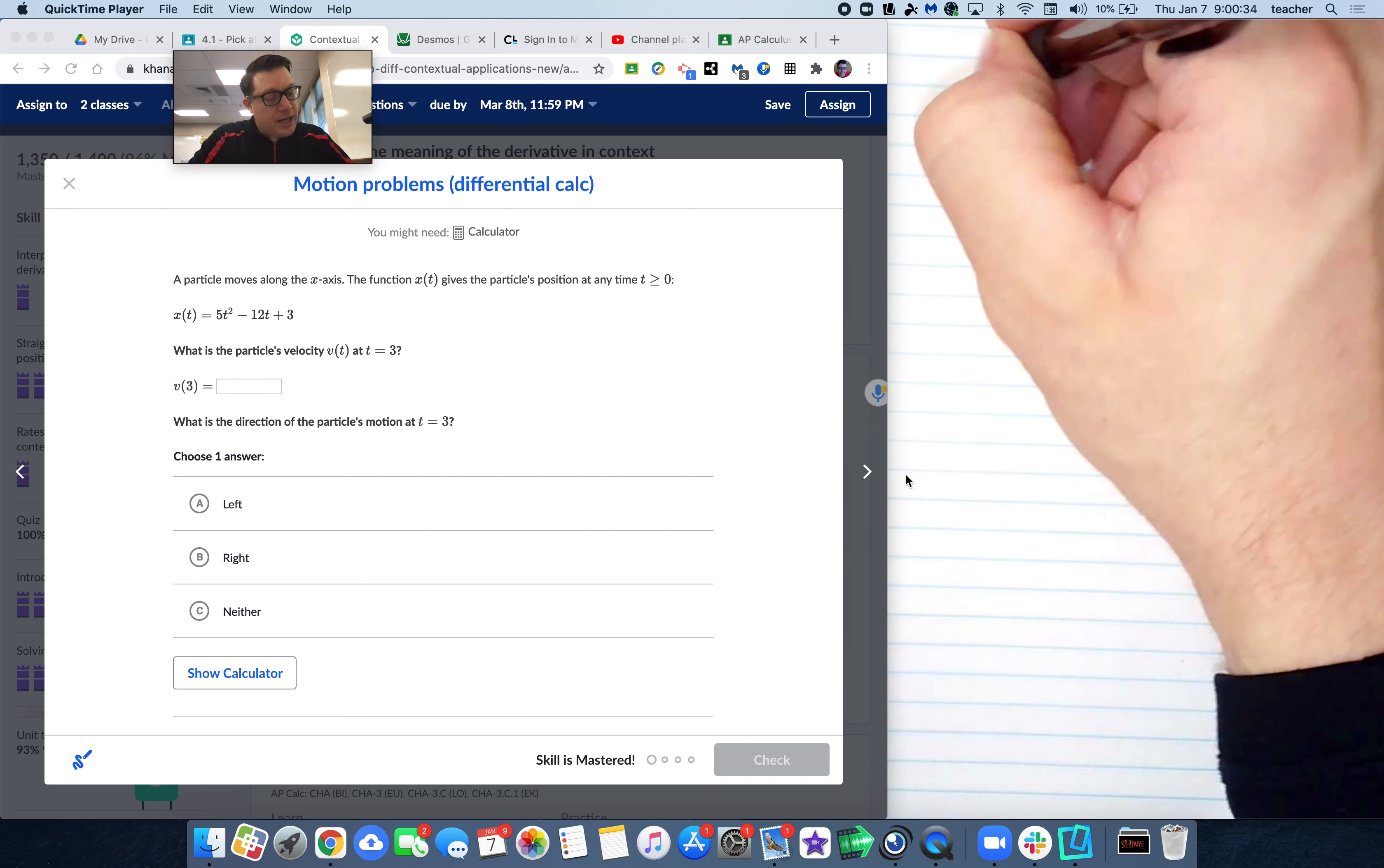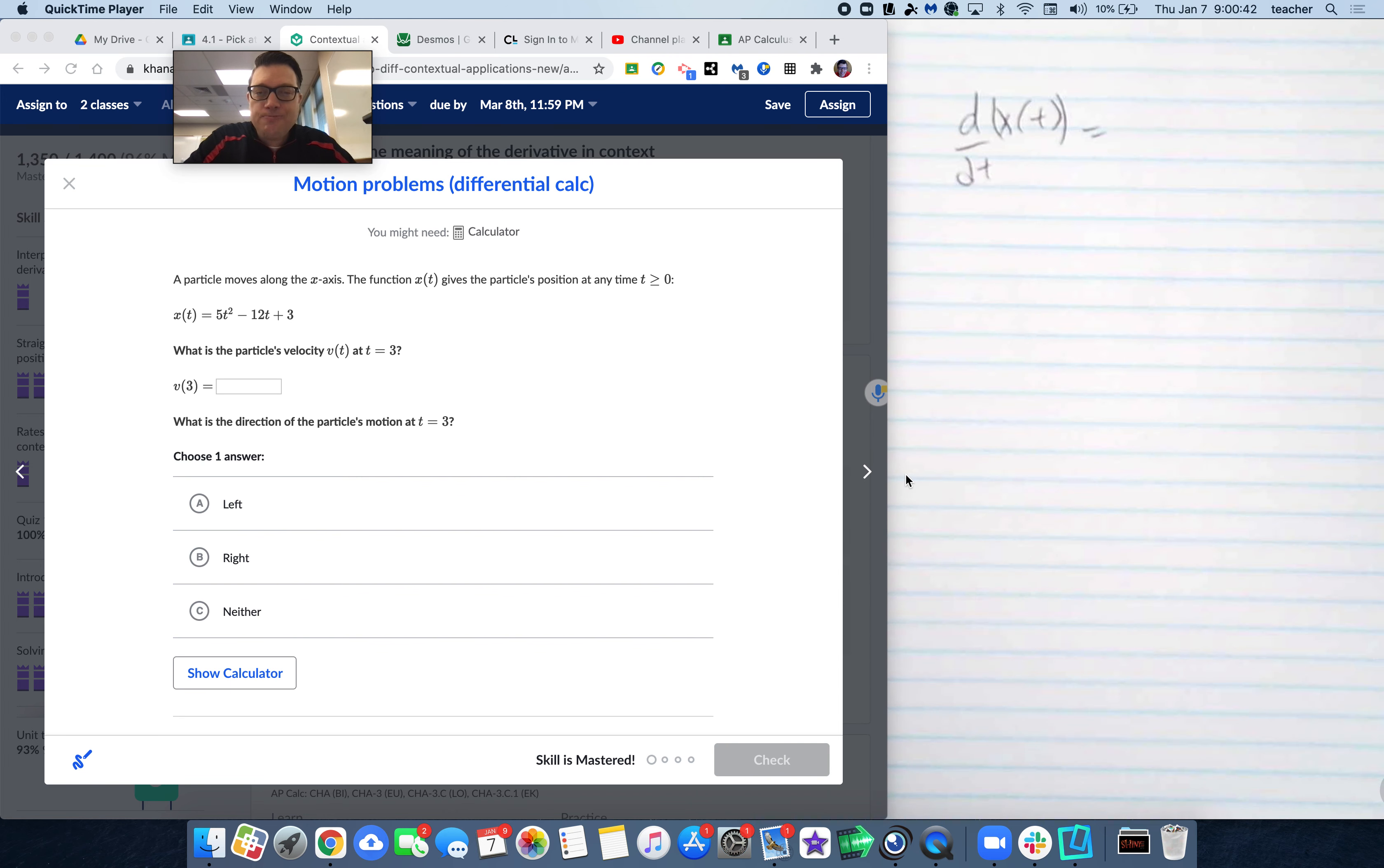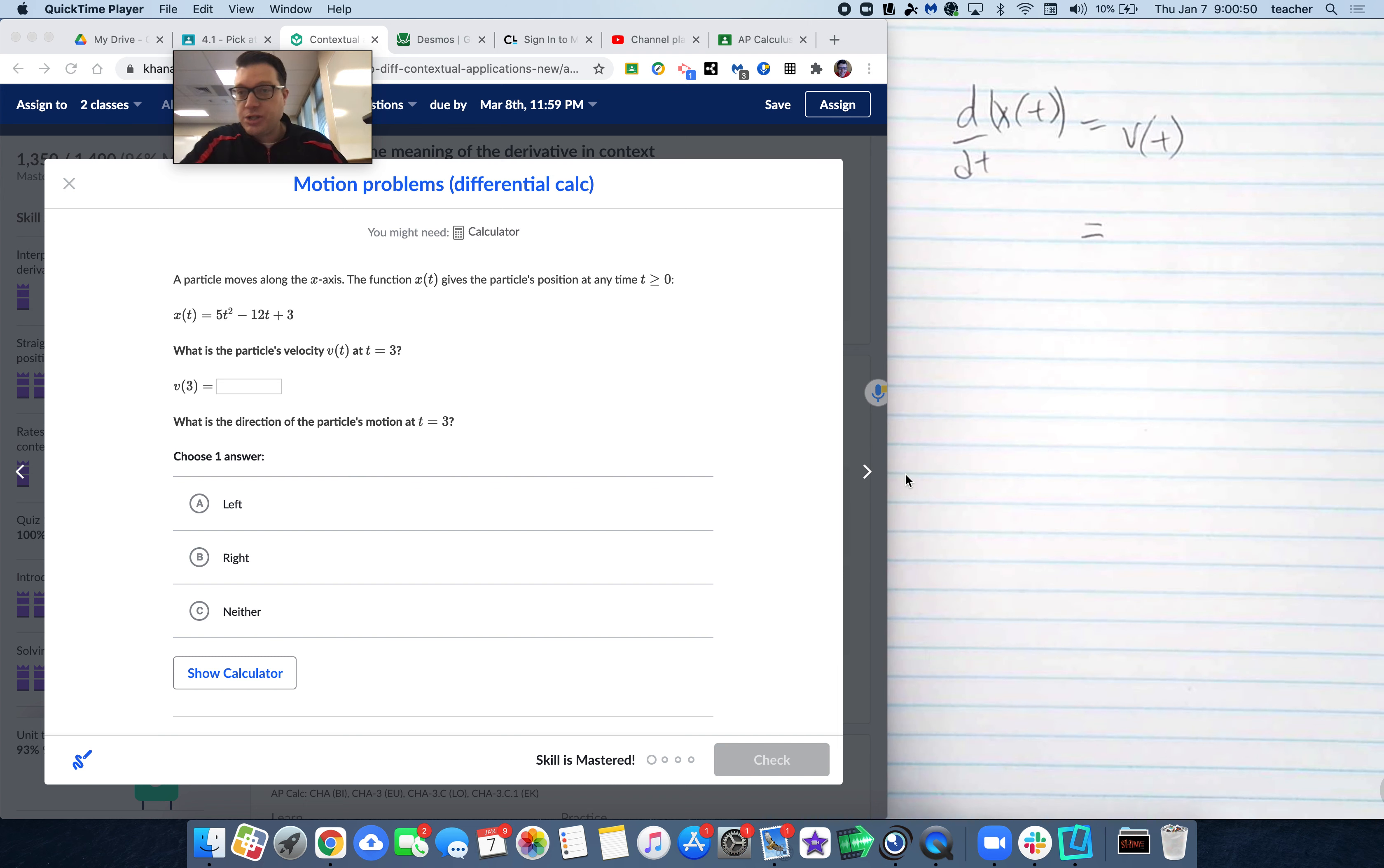If x(t) is an equation that's given to us, then the derivative with respect to t of the position is velocity. So in this problem, step number one, most of these problems involve taking the derivative of the function that you've been given.